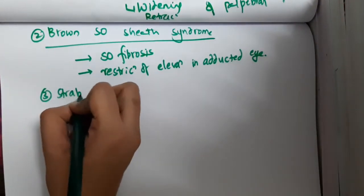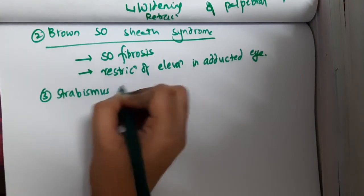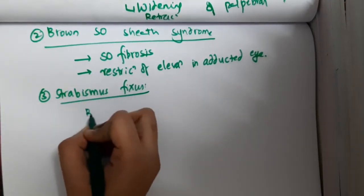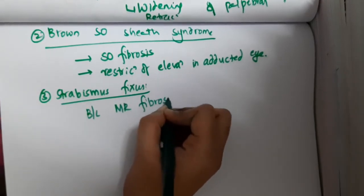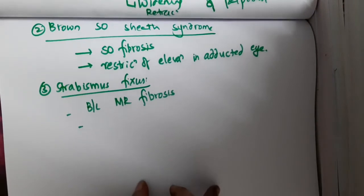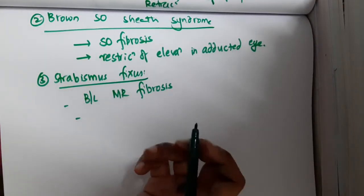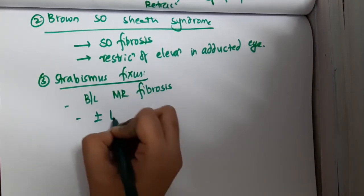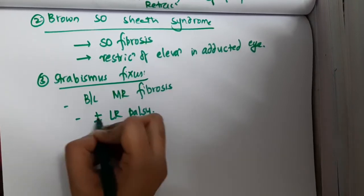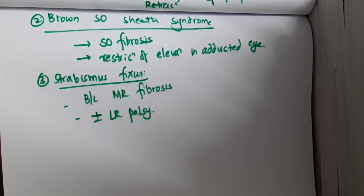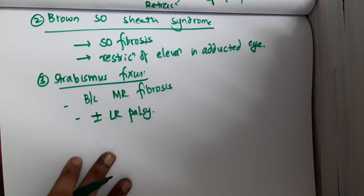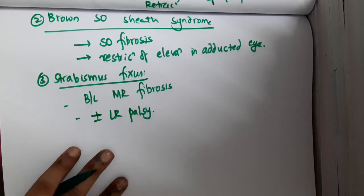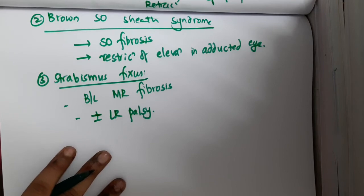The third type is strabismus fixus. In strabismus fixus, there is bilateral medial rectus fibrosis, along with bilateral medial rectus palsy plus or minus lateral rectus palsy. These are the different types of restrictive squints.